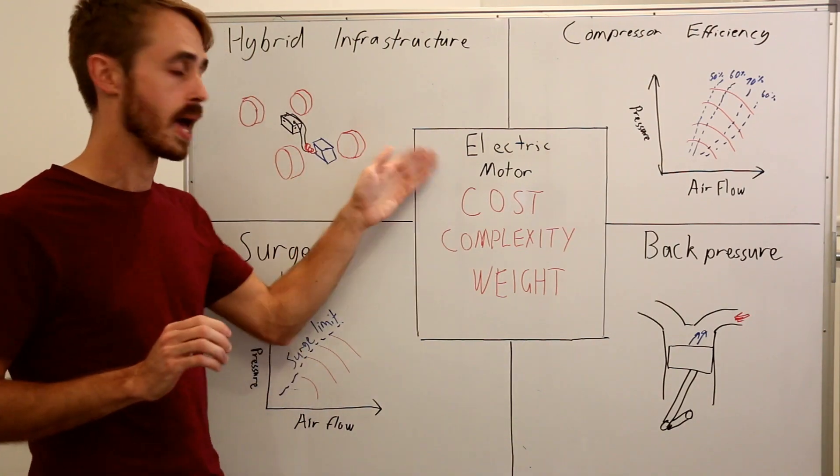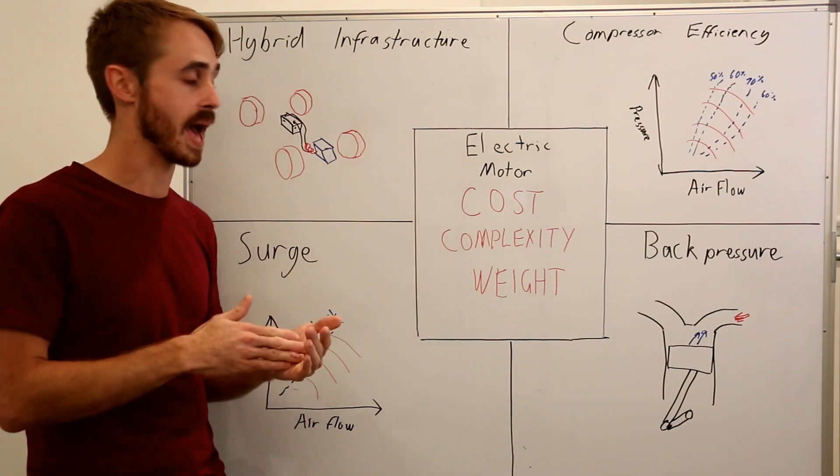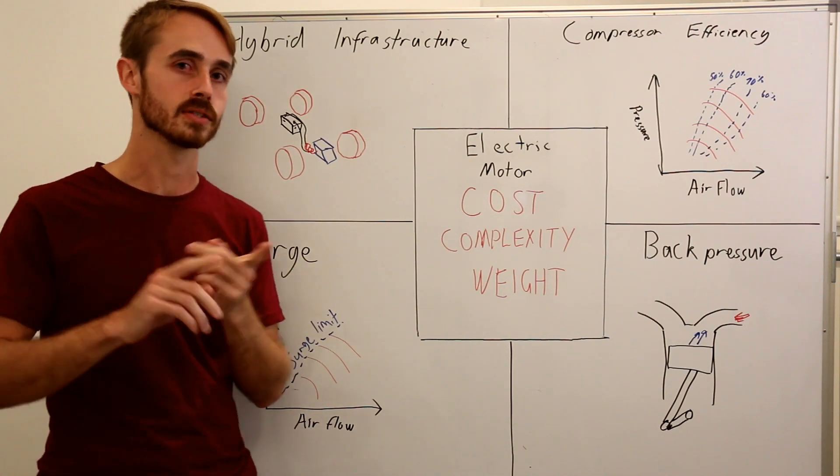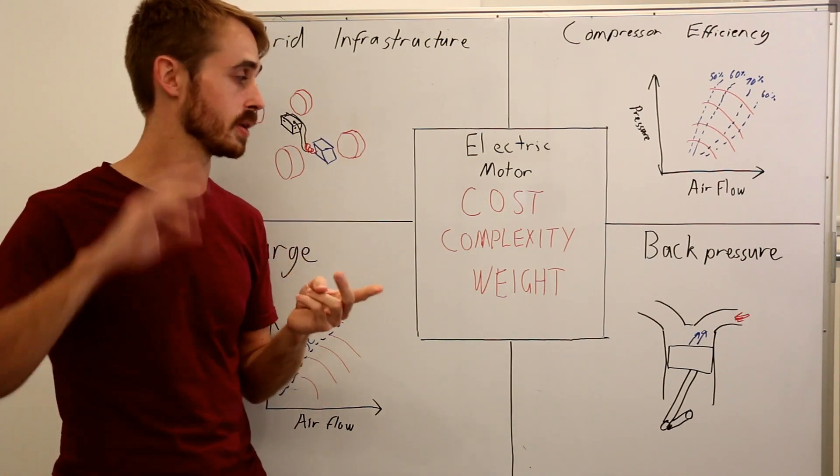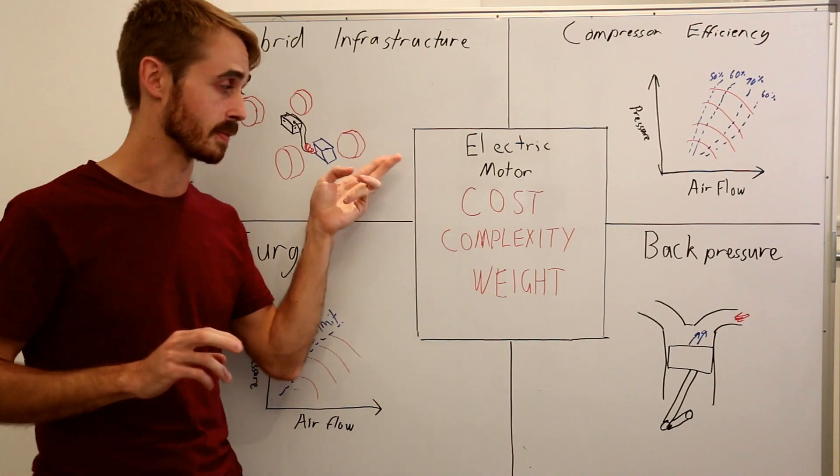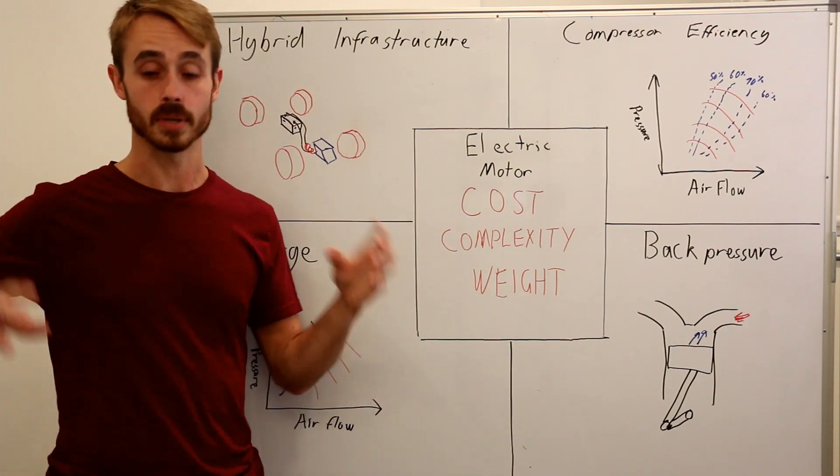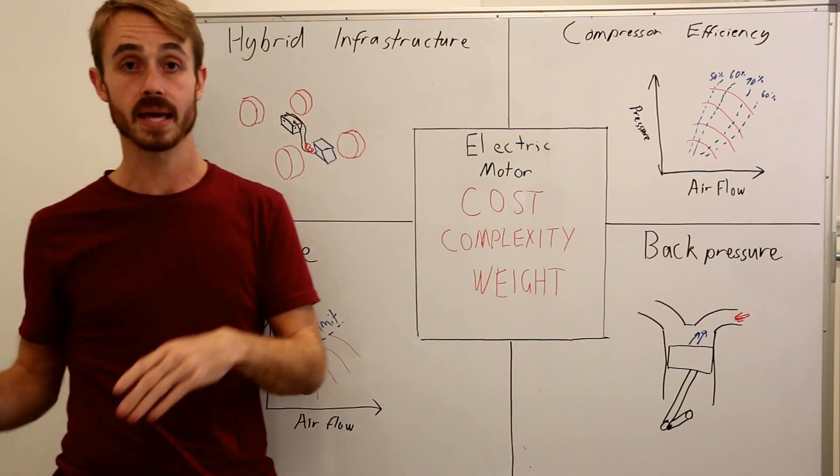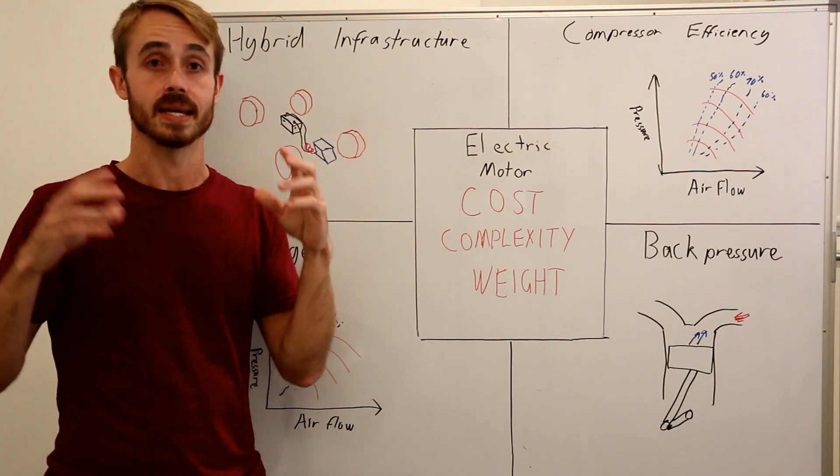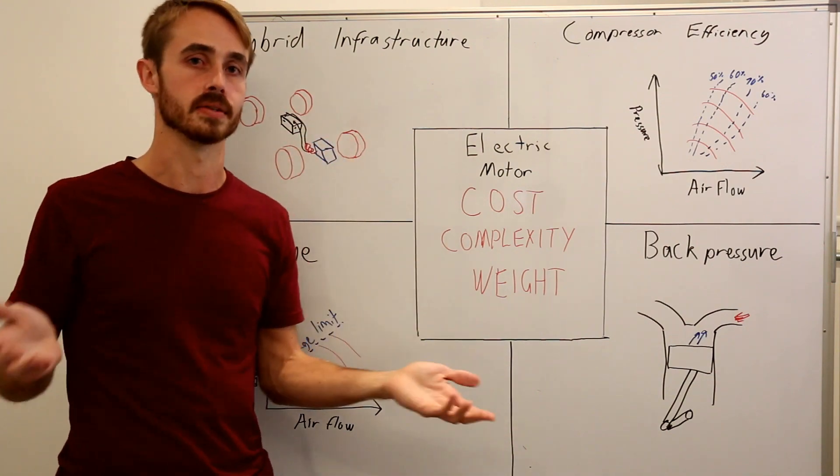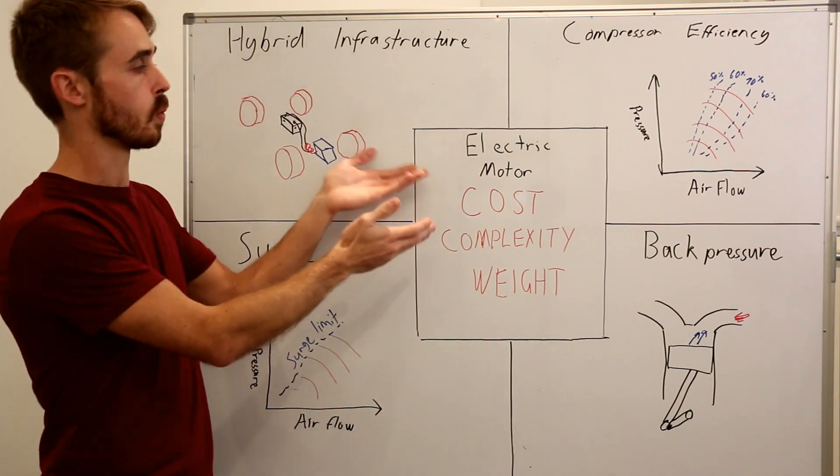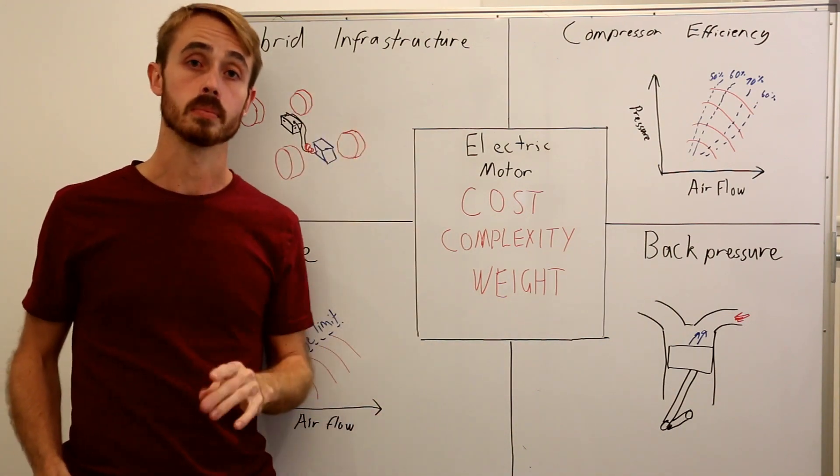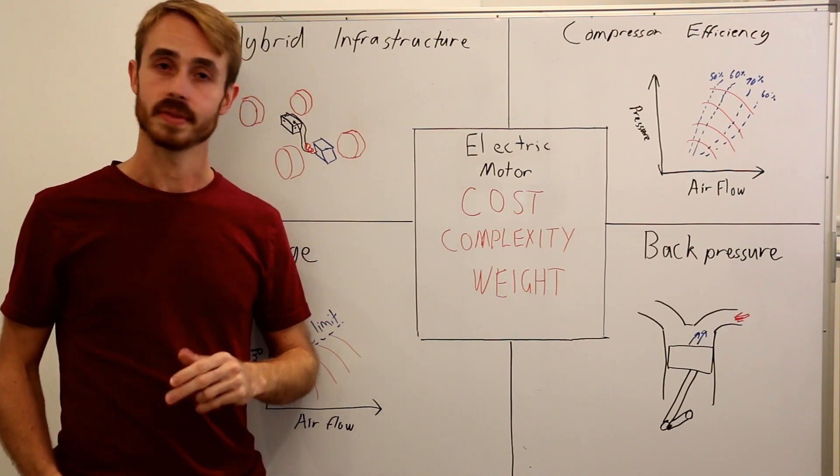and perhaps most obviously, an electric motor has to be added to your turbocharger assembly. Now adding this is going to up the cost because it's another component, it's an expensive component, this will up the complexity and it will up the weight because you are adding in this extra part that wasn't there before, it needs to be wired up, it's quite heavy, it needs some form of cooling depending on the setup. So you can see why adding the electric motor is a problem. And that's 5 problems with electric turbocharging.